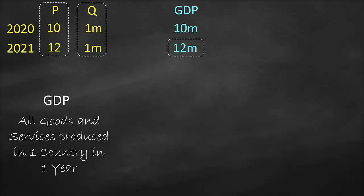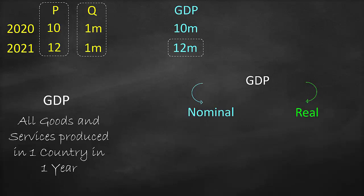Therefore, every time we talk about GDP, we need to differentiate between two types: nominal GDP and real GDP. Nominal GDP reflects current or market prices, and therefore it reflects inflation. Consequently, it will be misleading — like in our example, where we assumed 2021 is better than 2020 because nominal GDP in 2021 is higher than nominal GDP in 2020.